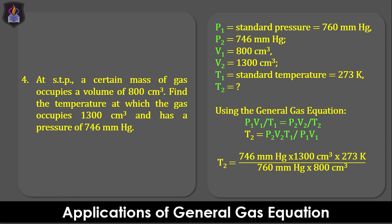Evaluating the equation, we obtain 435.5 Kelvin as the final temperature of the gas. In our next tutorial we'll be looking at the ideal gas equation. Subscribe and turn on your notification bell to get notified when the video is published.